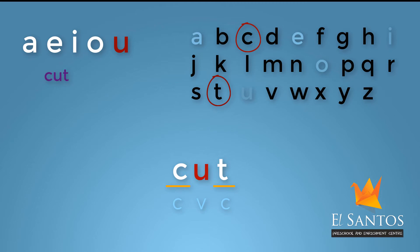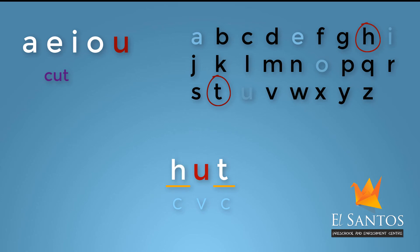Let's do another one. Remember, you can pick any sound for your first letter and try to form a meaningful word. For our next word, let me replace the letter C with H, which has the sound H. It reads as H, U, T — Hut.